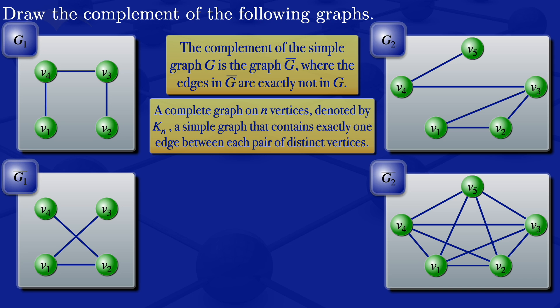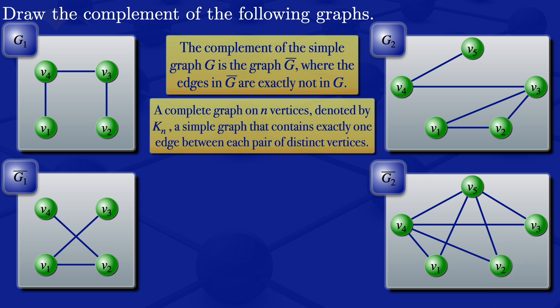From this complete graph, I will then remove the edges that are in graph G2. So I will remove this edge, remove this edge, remove this edge, remove the edge where we have V3, then remove the edge where we have V4. We have removed all the edges that were in G2, so the edges that are not in G2 form the complement of G2 — what we are having here is the complement of the graph G2.